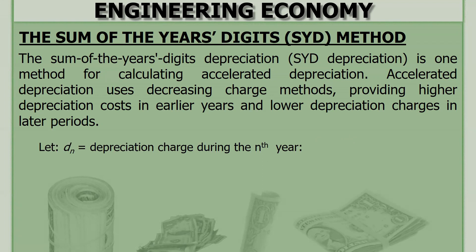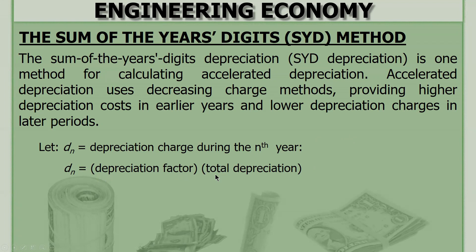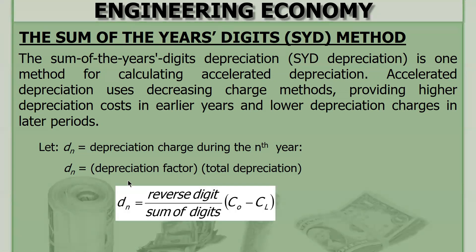For this method, we will be using the symbol d sub n — the depreciation charge during the nth year, or any year. It is equal to the depreciation factor times the total depreciation. The depreciation factor is the ratio of the reverse digit over the sum of the digits, while the total depreciation is the difference between the first cost and the salvage value.